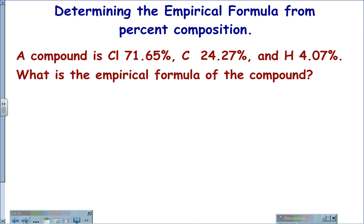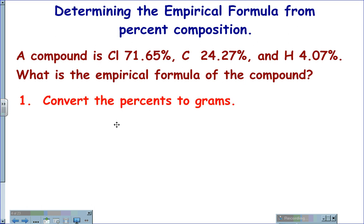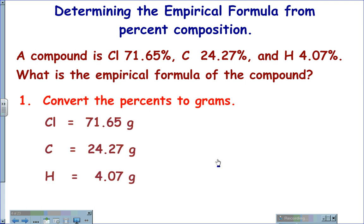In order to solve for the empirical formula from percent composition, we will begin with a sample problem: a compound is chlorine at 71.65%, carbon at 24.27%, and hydrogen at 4.07%. What is the empirical formula for this compound? The first thing we are going to do is change the percents to grams. Therefore, chlorine is 71.65 grams, carbon is 24.27 grams, and hydrogen is 4.07 grams.